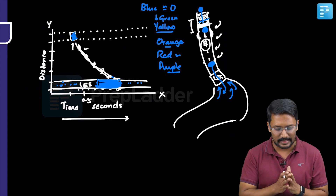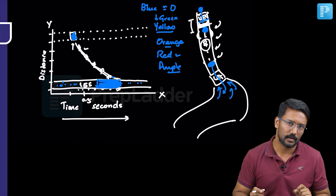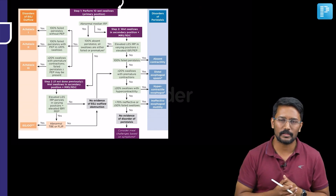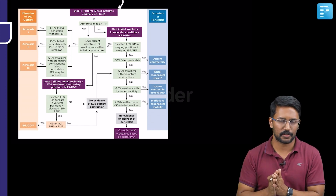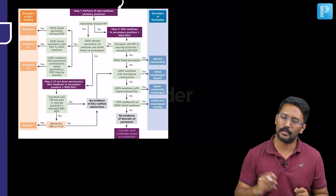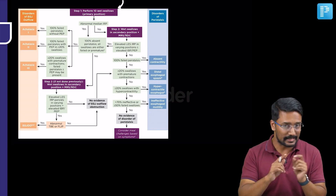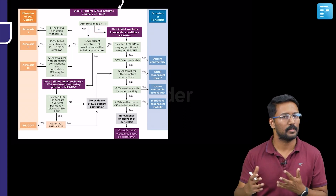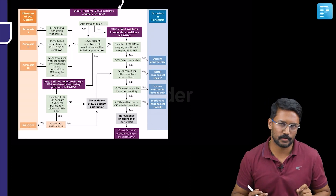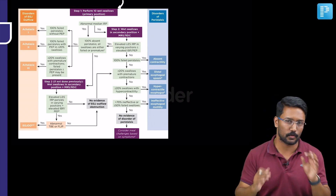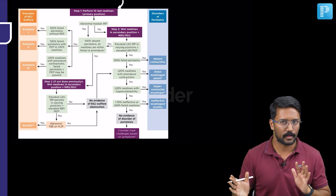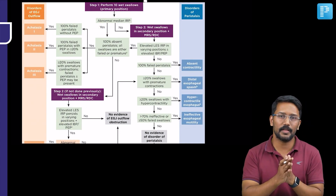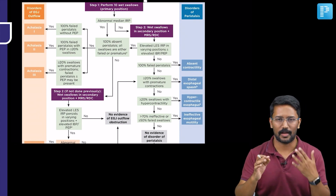Achalasia is diagnosed and classified based on high resolution manometry using 10 wet swallows. The first data point to check is the median integrated relaxation pressure — not the same as resting LES pressure. If median IRP is less than 15 mmHg (normal), we think of disorders of peristalsis. If it is more than 15 mmHg (elevated), we think of disorders of esophagogastric junction obstruction — either achalasia or outlet obstruction.